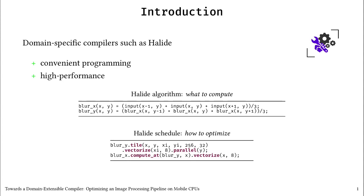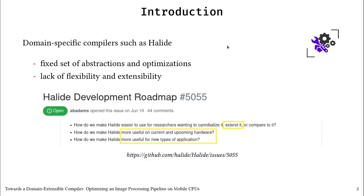Why do we care about domain extensibility? After all, domain-specific compilers such as Halide for image processing provide both convenient programming and high performance. In Halide you describe what to compute by writing a high-level algorithm and you control optimizations separately by writing a schedule. The issue is that domain-specific compilers rely on a fixed set of abstractions and optimizations. Because of this, they lack flexibility and extensibility.